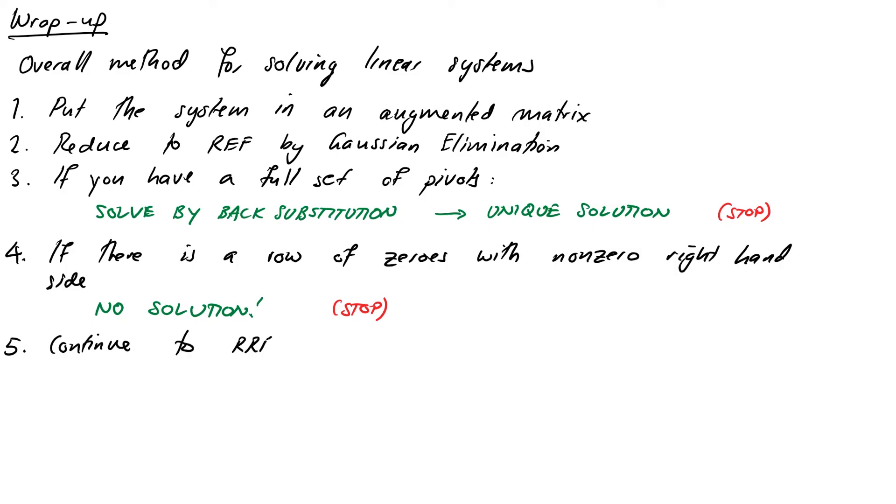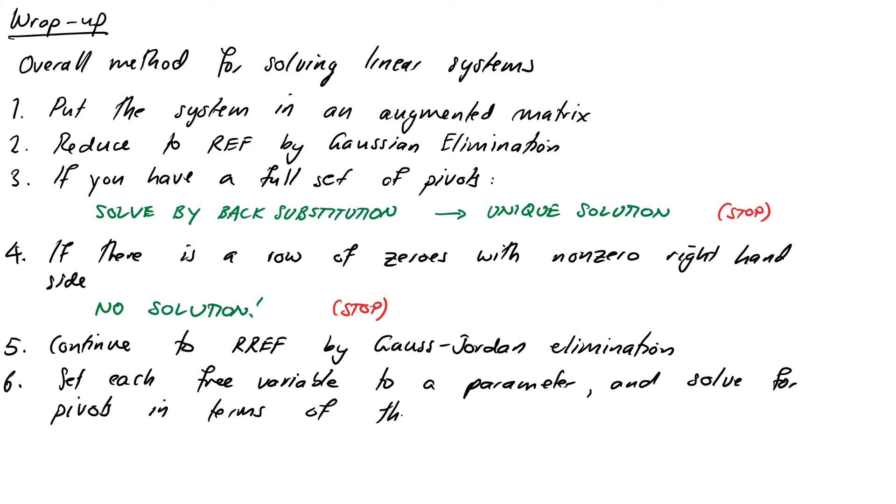If neither of these things have happened, continue to step 5, where we'll continue on to reduced row echelon form by Gauss-Jordan elimination. You will then set each free variable to a parameter each, and you will solve for the pivots in terms of these. And then we'll write our solution down finally in step 7 as a vector parametric equation.